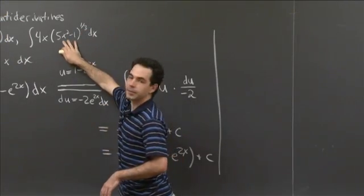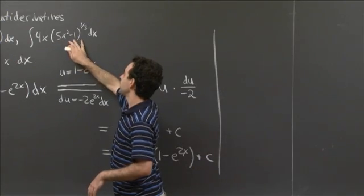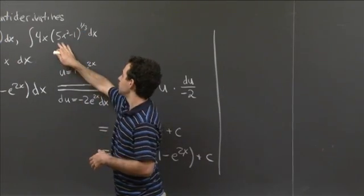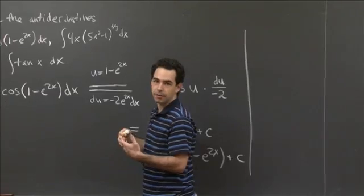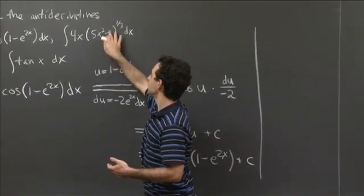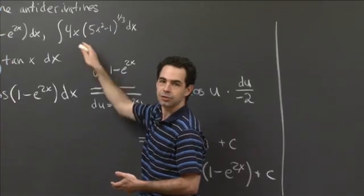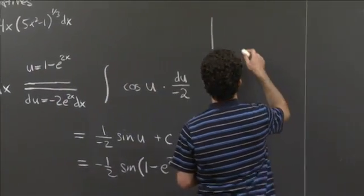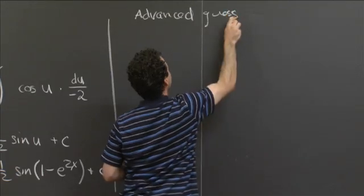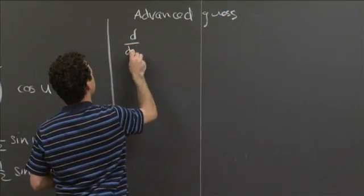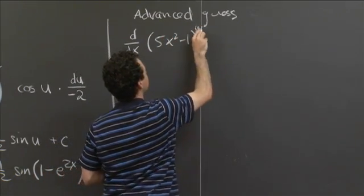So how can we get from a derivative something like 5x squared minus 1 quantity to the 1 third? Well, if you started off with 5x squared minus 1 to the 4 thirds and took a derivative, you would have this 5x squared minus 1 to the 1 third coming out. And you would also have some stuff coming out in front by the chain rule. Well, what kind of stuff? Well, it would be some derivative of this quadratic polynomial, which would be some linear polynomial. And indeed, that kind of matches what we have out front.